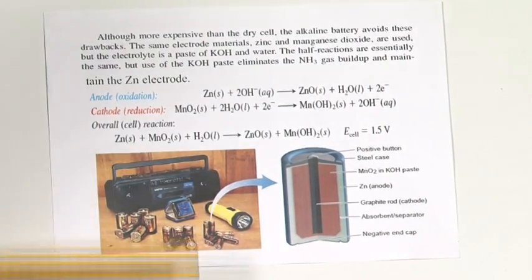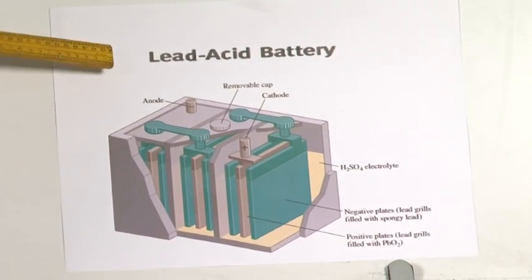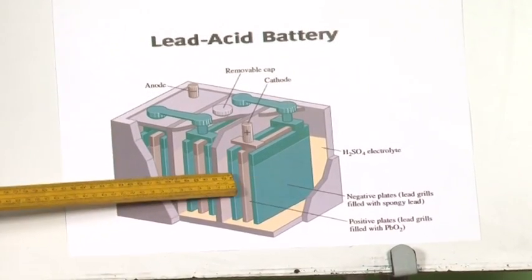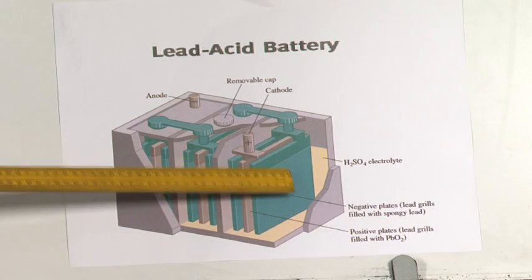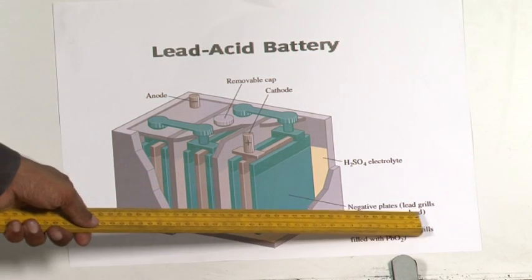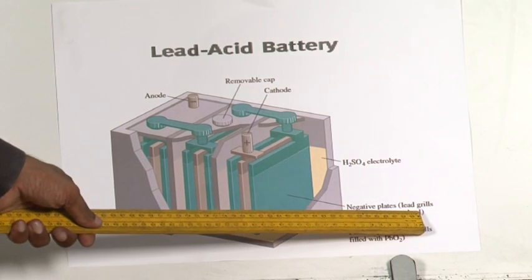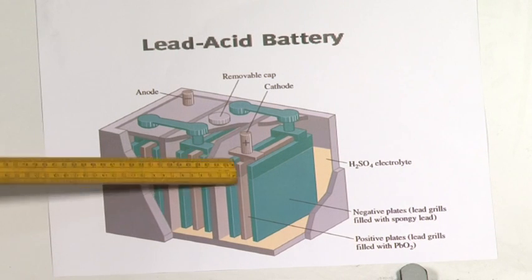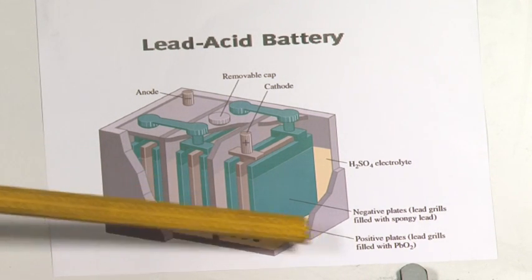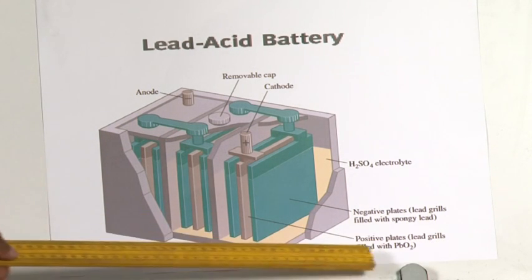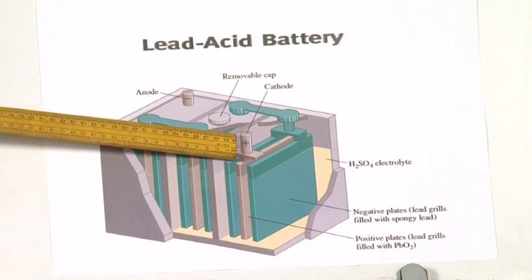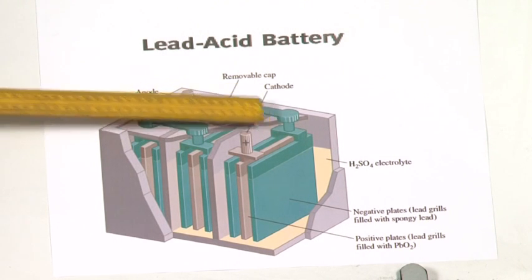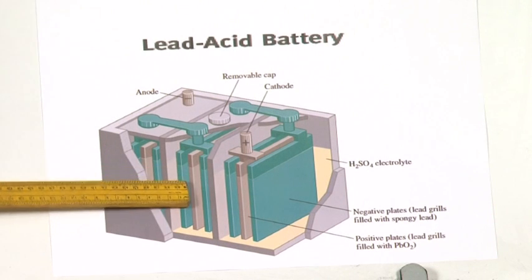The most commonly used secondary cell is the lead storage battery, or lead acid battery. It is constructed with panels: the negative plates are made of lead grills filled with spongy lead, and the positive plates are made of lead grills filled with lead oxide (PbO2). The positive plates act as cathode (where reduction takes place) and the negative plates act as anode (where oxidation takes place).